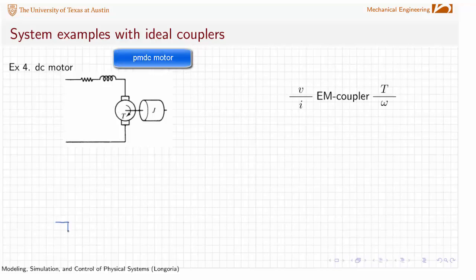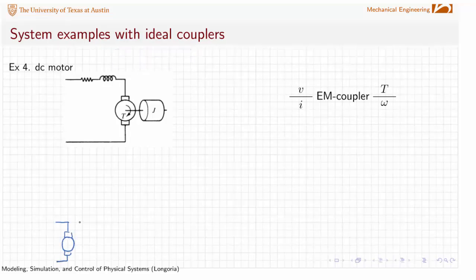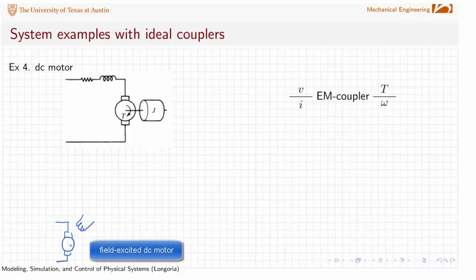If we were to have a motor that had a schematic with a separate field like this, this is a field excited DC motor, and that means that the conversion between the power electrical going to mechanical is controlled by this field circuit.